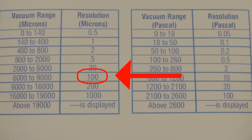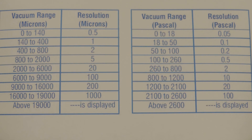In that 6000 to 9000 range, the display reading will change in 100 micron increments. This keeps the display from being a blur of numbers.